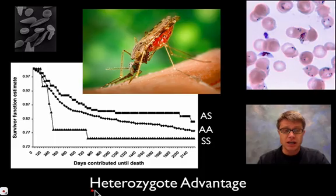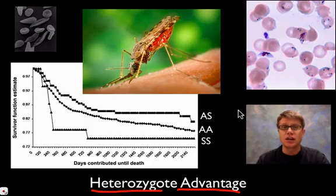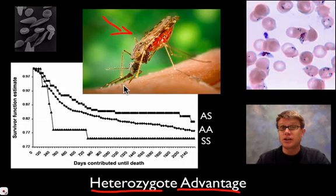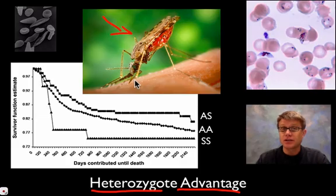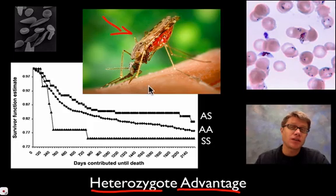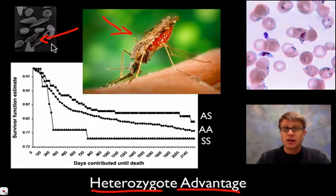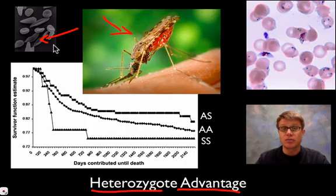Next we're looking at genes and heterozygote advantage — when you have two copies of a gene and that gives you some kind of advantage. This is the most deadly animal on our planet: the Anopheles mosquito. It passes an organism called Plasmodium, which causes malaria. Malaria is killing more people every year than any other disease on our planet, creating huge selective pressure, especially in sub-Saharan Africa. The story of heterozygote advantage is that if you have the sickle cell gene, you produce red blood cells with a sickle appearance — it's a mutation or change in a single letter in the gene that makes the protein hemoglobin in our blood. If you have two copies of that, you make sickle cell blood.